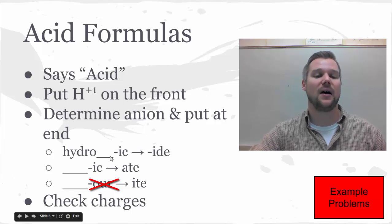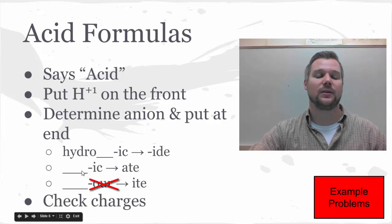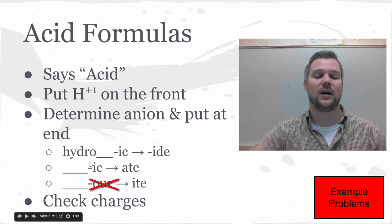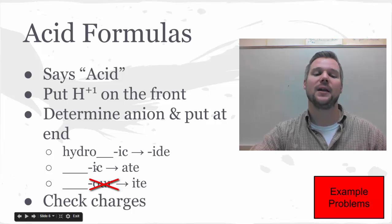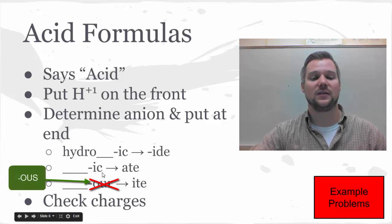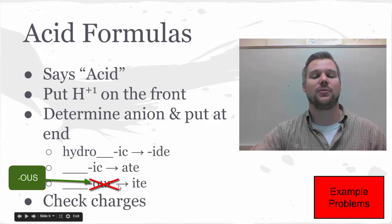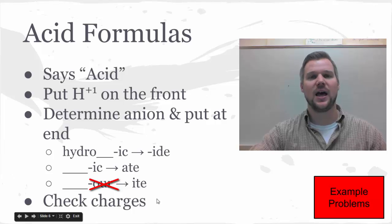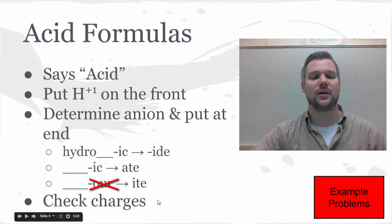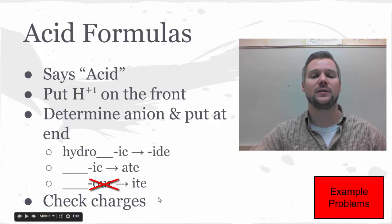Or if you happen to have sulfuric, you'd cross off the ic and replace it with ate, so it becomes sulfate. Or if you have nitrous acid, you would take the ous and replace it with ite. Don't forget to check your charges on acids as well. Acids need to sum to zero, so make sure that your pluses and minuses cross.